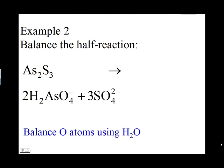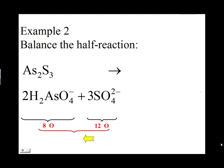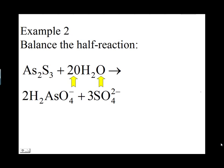The next step is to balance oxygen atoms. There are no oxygen atoms on the left side. On the right side, two H2AsO4⁻ contain eight oxygen atoms and three SO4²⁻ contain twelve, for a grand total of twenty oxygen atoms. You need to add twenty oxygen atoms to the left side by adding twenty molecules of water.